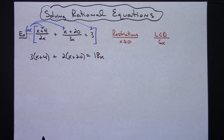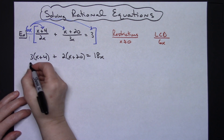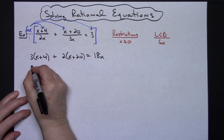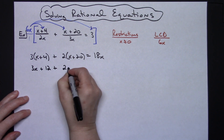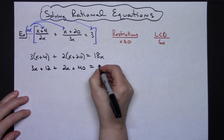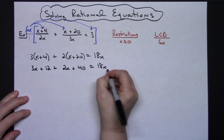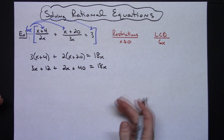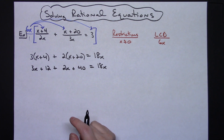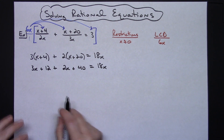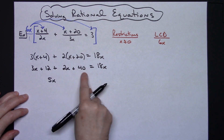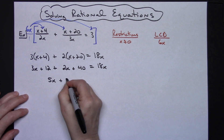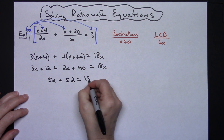At this point it just becomes pretty straightforward: distributive property, combine like terms, solve for x. Distributing gives 3x plus 12, and distributing the second term gives 2x plus 40, all equal to 18x. Combining like terms on the left: 3x and 2x gives 5x, and 12 and 40 gives 52, so 5x plus 52 equals 18x.